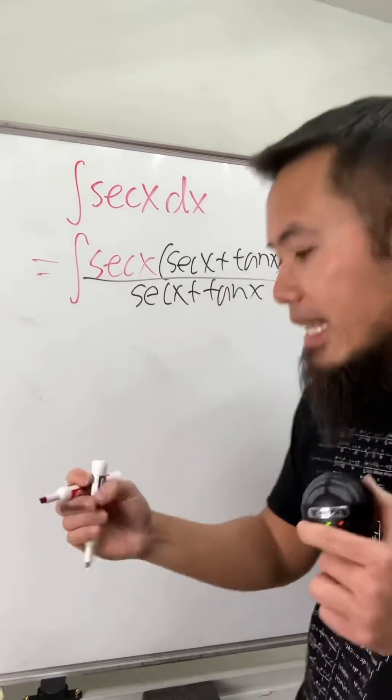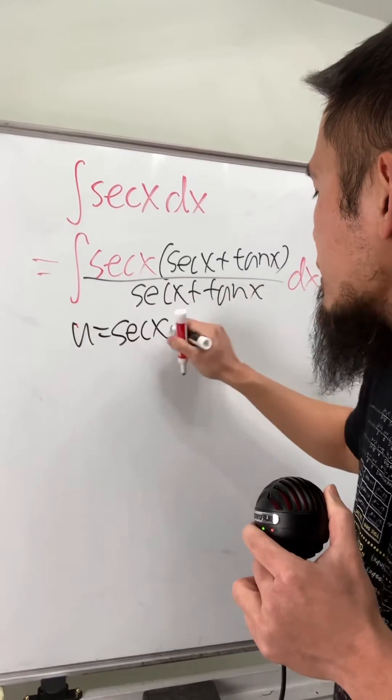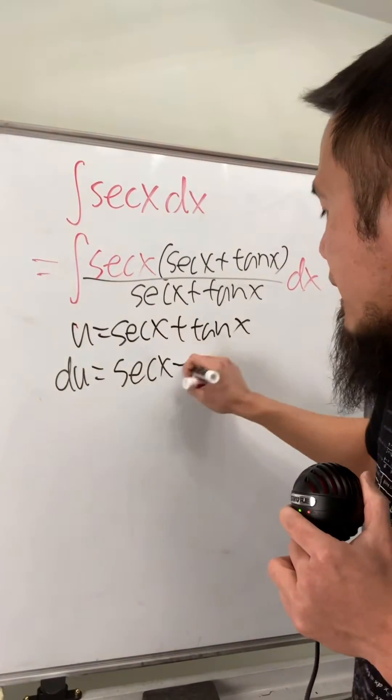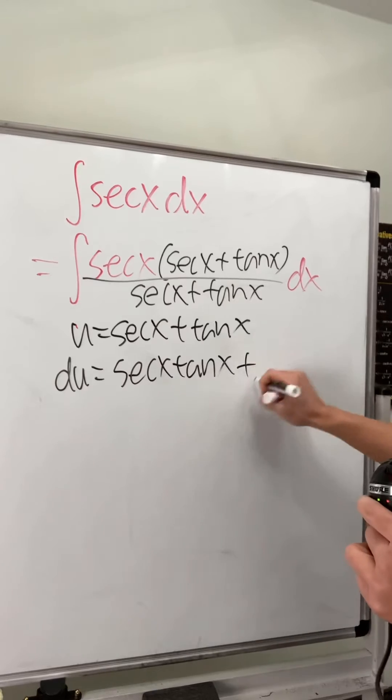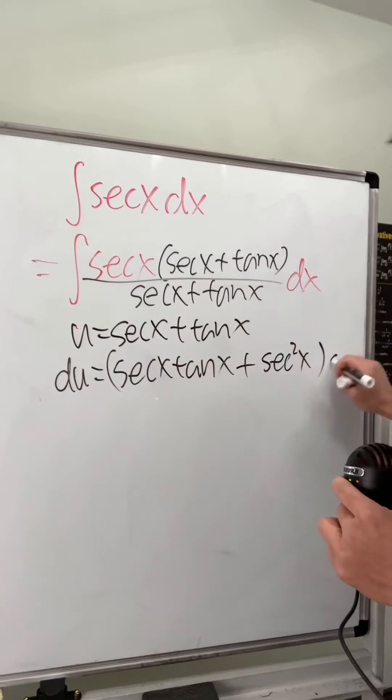This is what we have and again I can let u equal to the denominator which is going to be secant x plus tangent x. And you will see this is going to work out very nicely because du is just going to be the derivative of secant x, which is just going to be secant x times tangent x, and then plus the derivative of tangent is going to be secant squared x, right? And don't forget the dx right here.